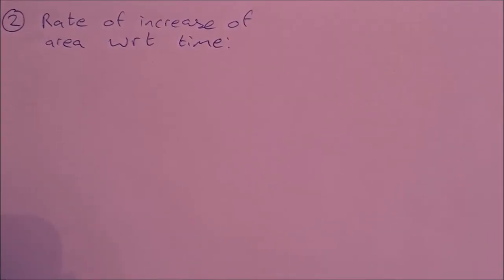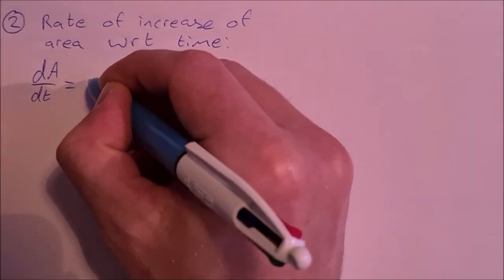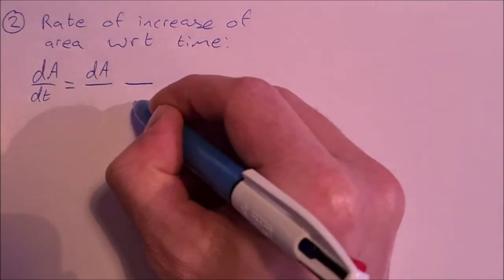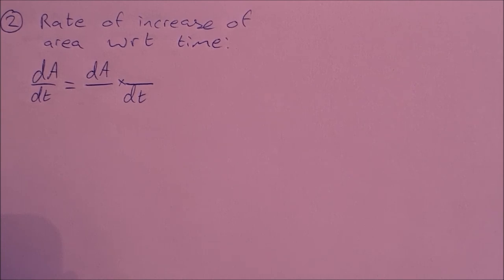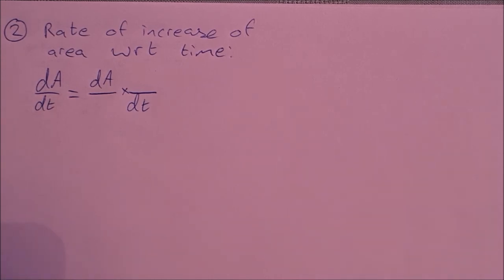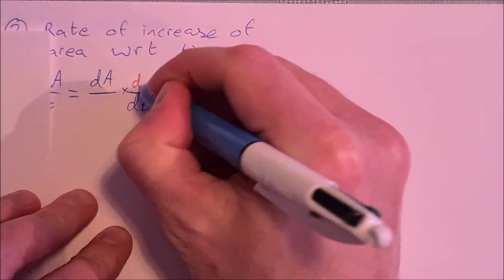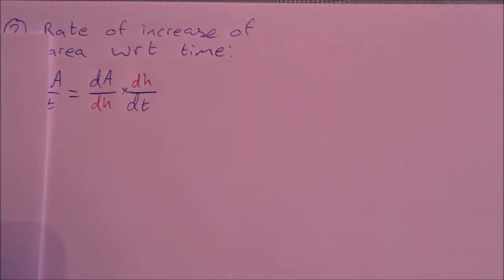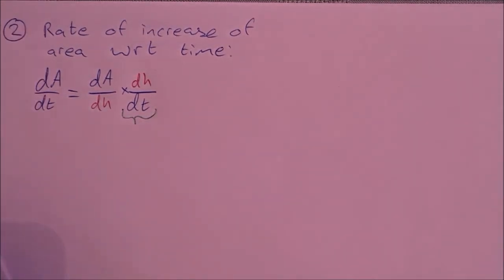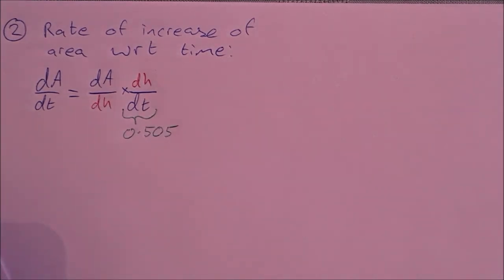On to the second part: the rate of increase of area with respect to time, dA/dt. Because it's a rates of change question, we split up dA/dt using the chain rule. Looking at what fits in the middle, we already have dh/dt from the previous part — so it makes sense to put dh in the middle. We already know dh/dt is 0.505, and now I just need to find dA/dh.